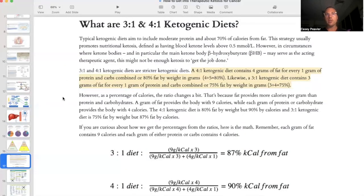Now, there are varieties of ketogenic diets, so-called 3 to 1 and 4 to 1 ketogenic diets. And what it basically means is on a 4 to 1 ketogenic diet, there are 4 grams of fat for every 1 gram of protein and carbs.